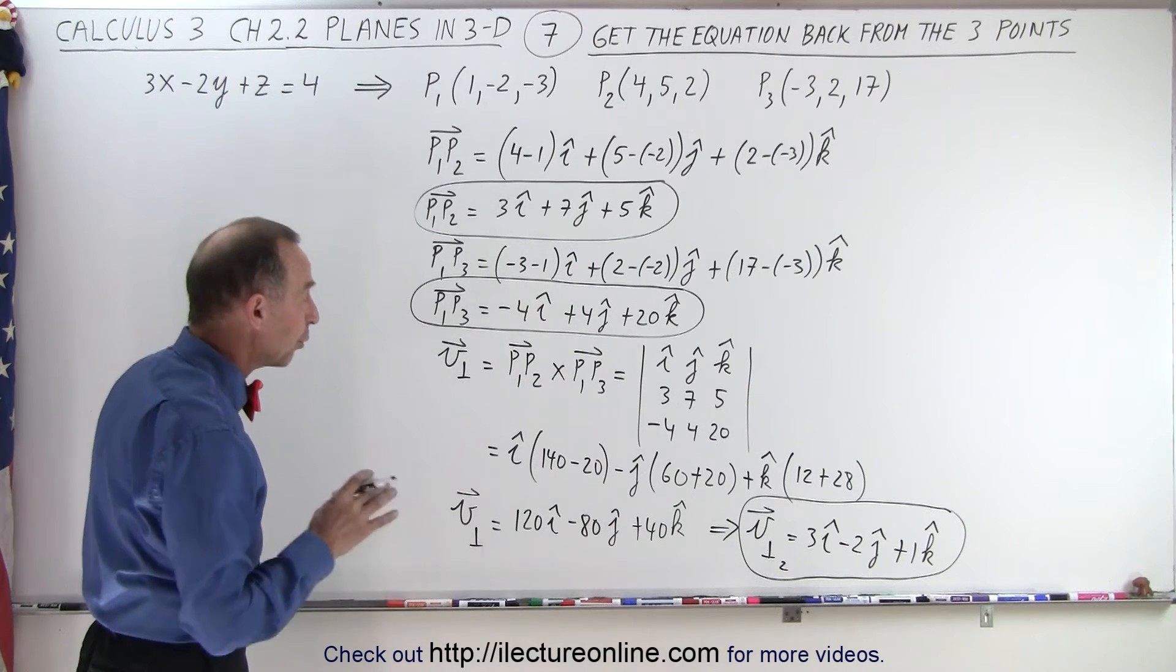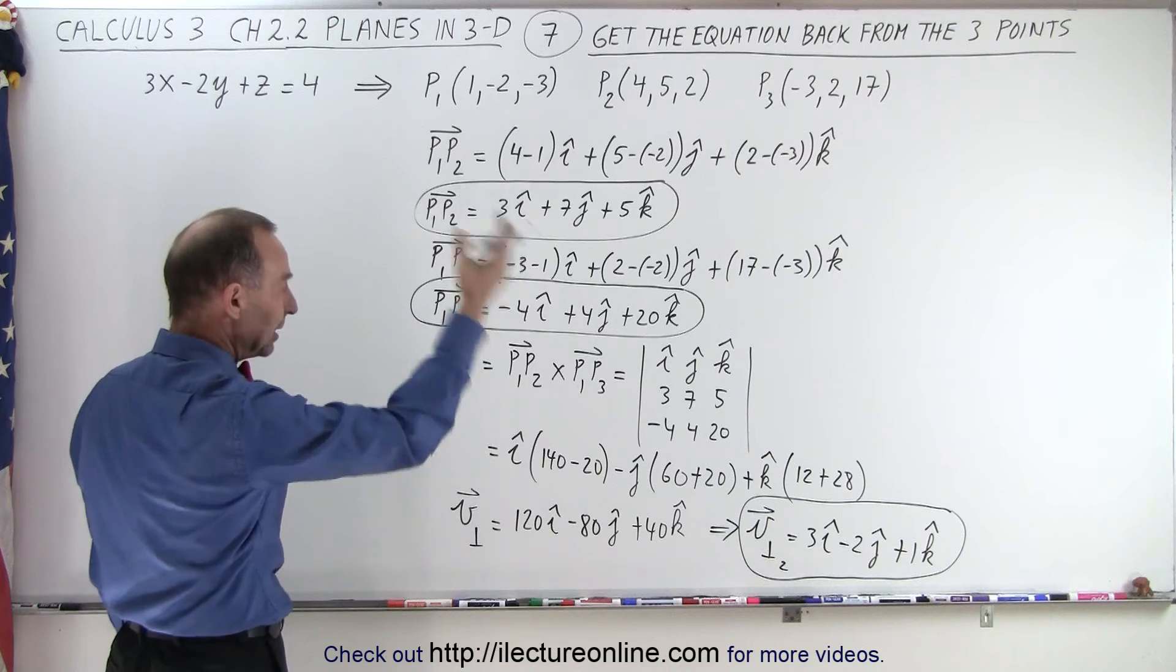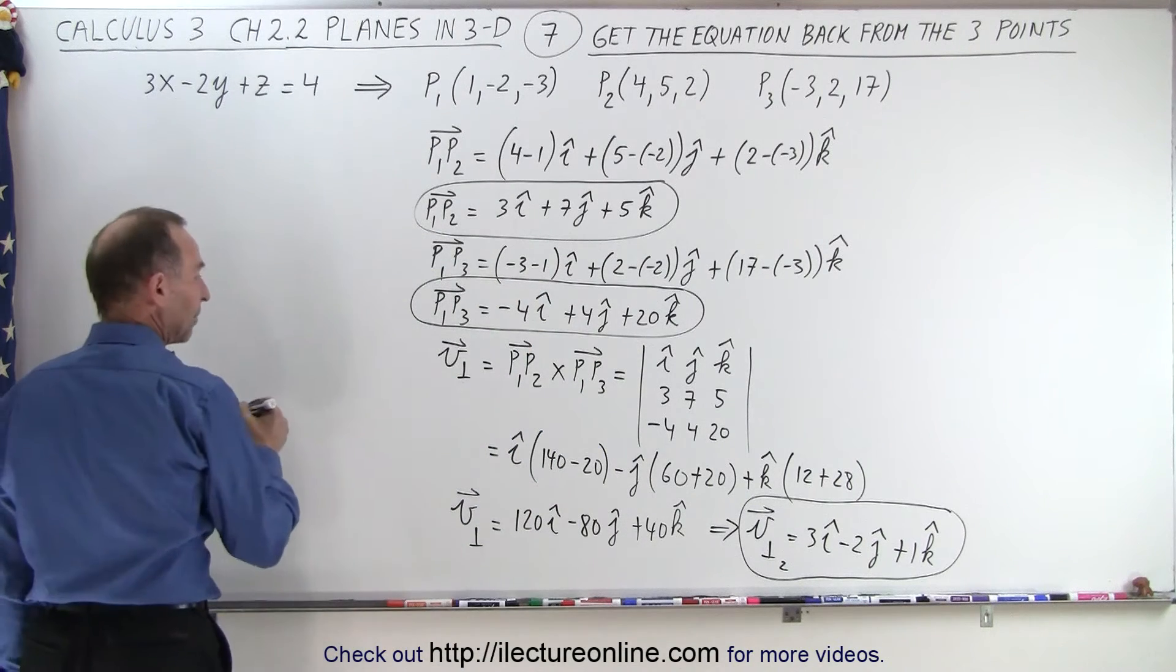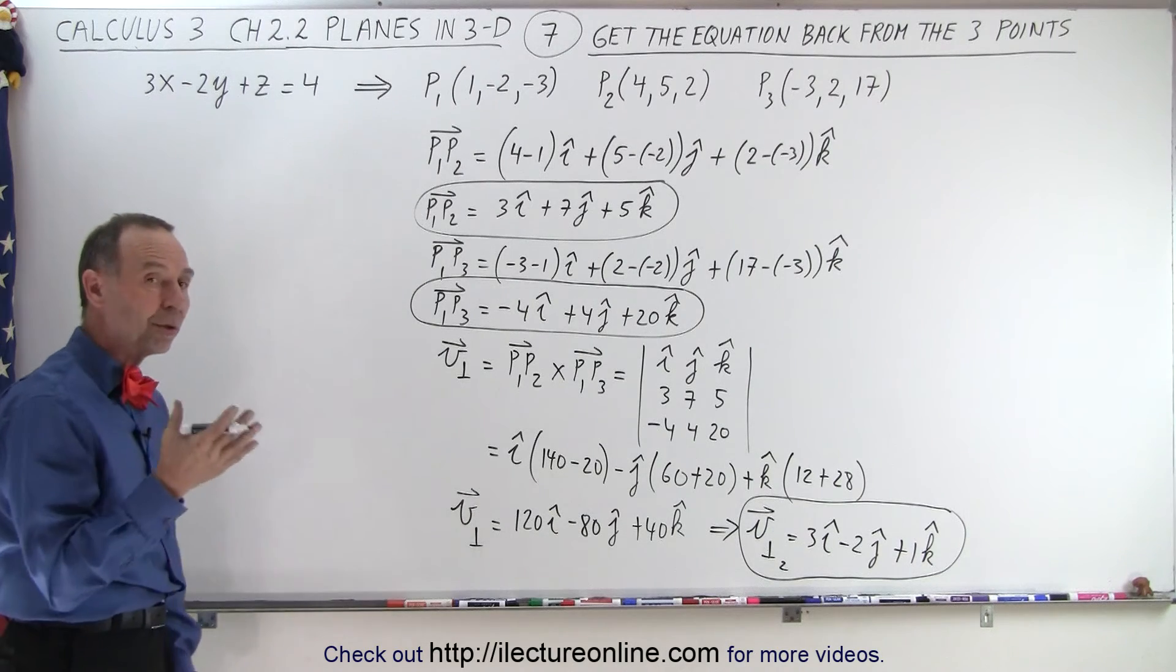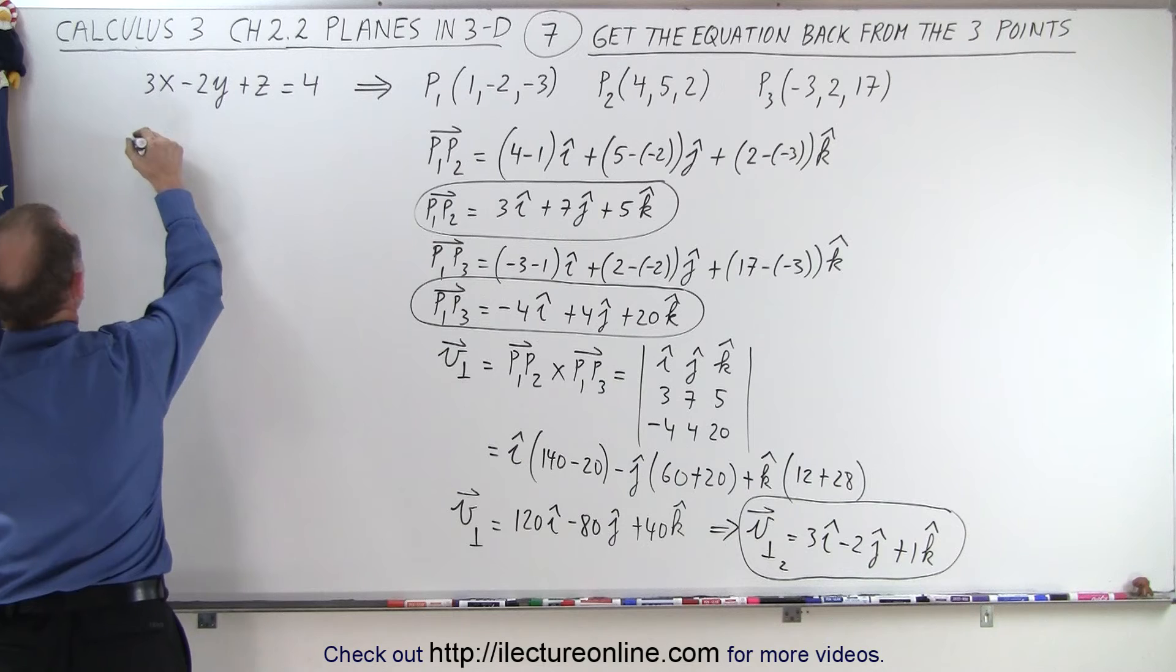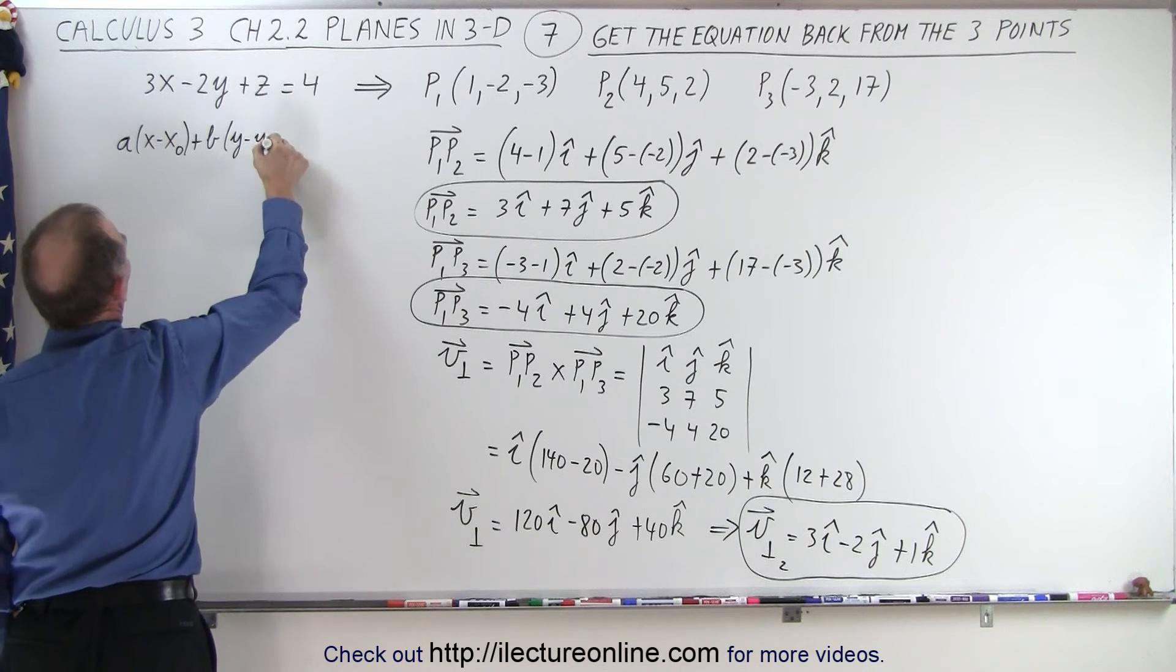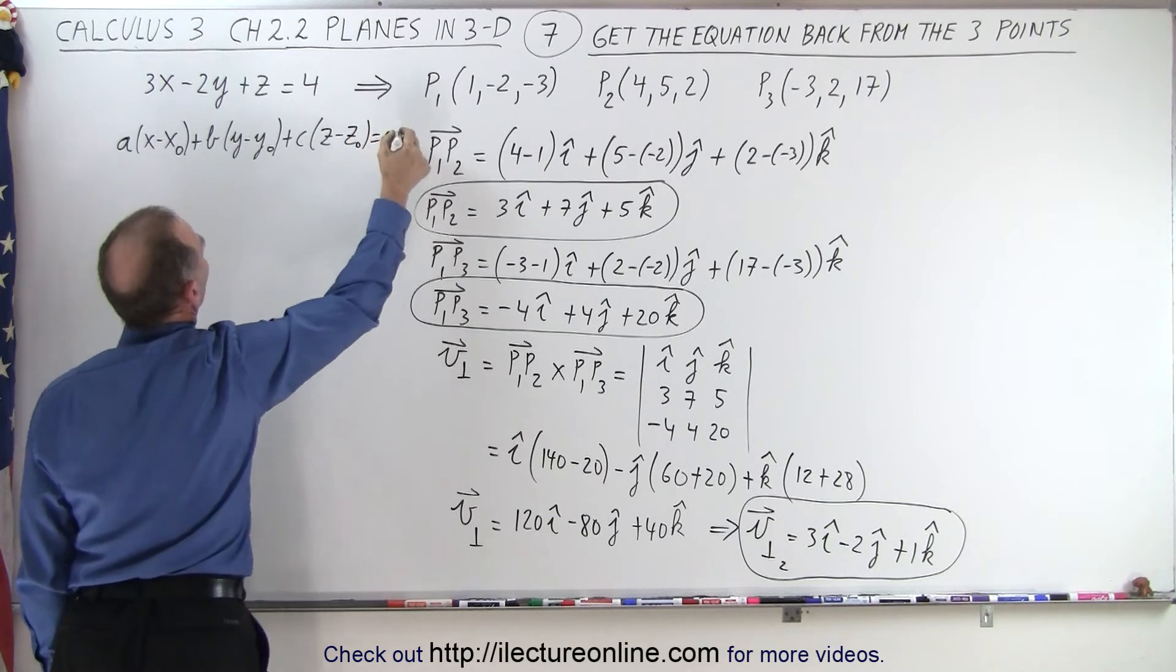Now we're ready to find the equation of the plane. I need to pick one point, and I need to pick the coefficients of the components of the vectors. So using one point and the normal of the vector, that's called the point normal form of the equation, that means we're going to get a times x minus x sub naught plus b times y minus y sub naught plus c times z minus z sub naught being equal to 0.